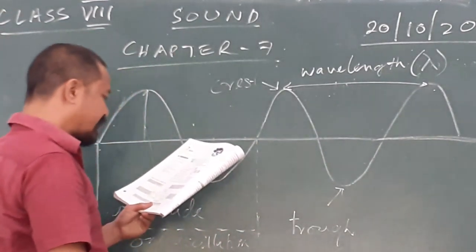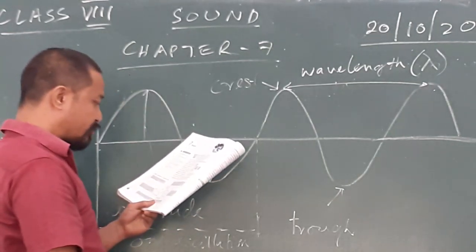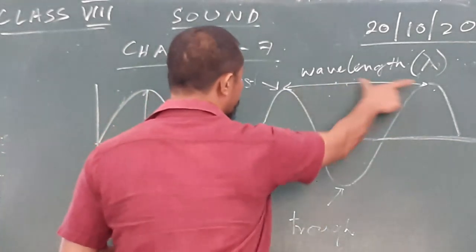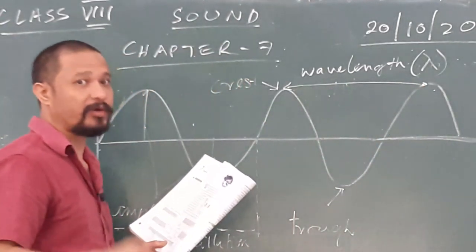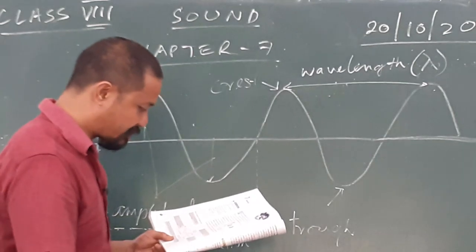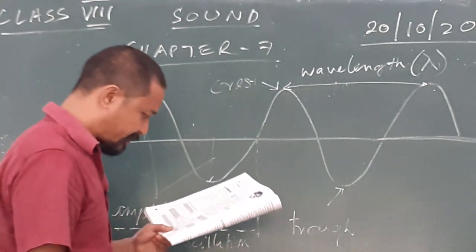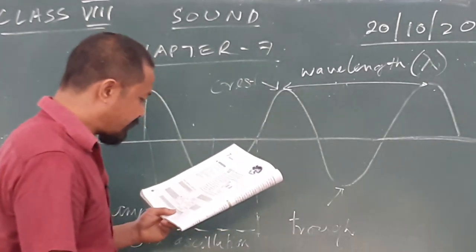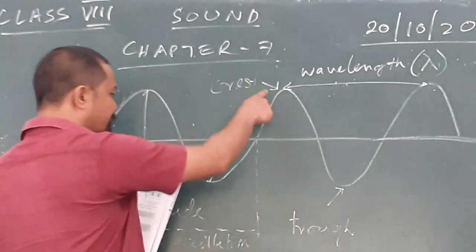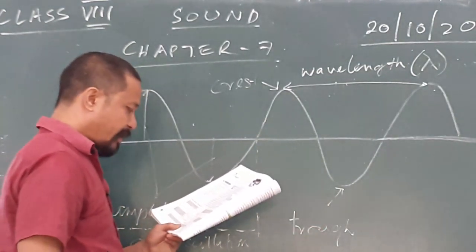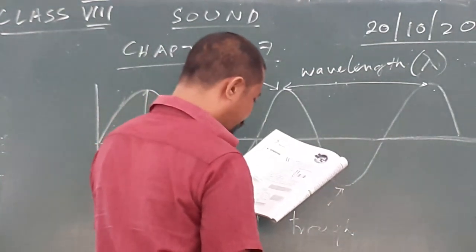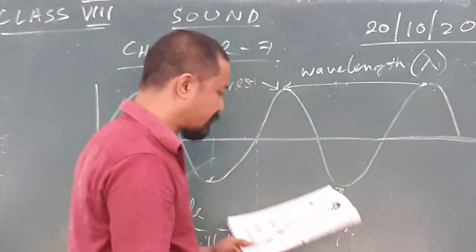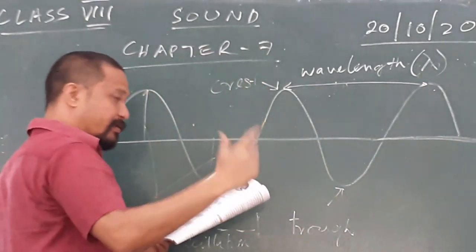Wavelength: it is the distance between two consecutive compressions or rarefactions. So, distance between two waves — that's why wavelength. This distance is the same as the distance between two successive crests and troughs. It is denoted by the Greek letter lambda, which is the symbol for wavelength.